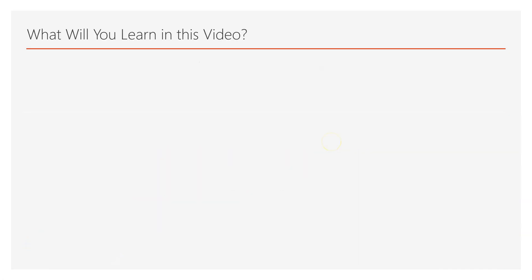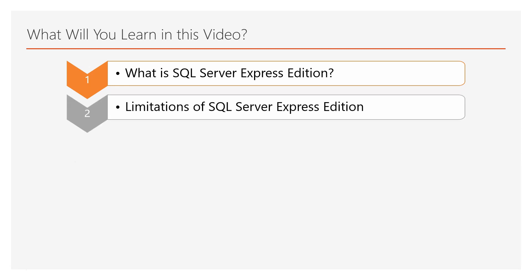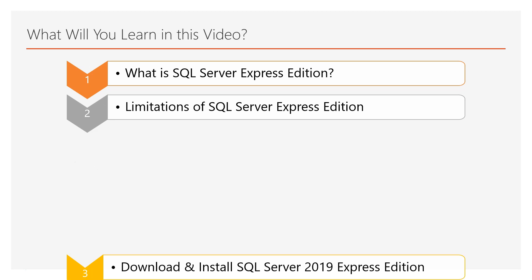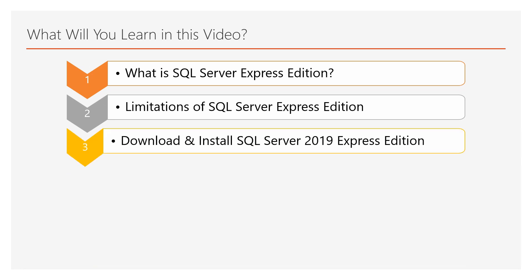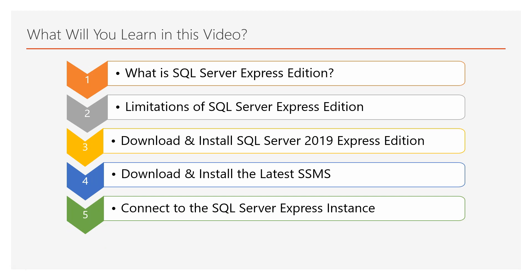So, what will you learn in this video? First, we're going to talk about SQL Server Express Edition — what it is and its limitations. Then, we're going to download and install SQL Server 2019 Express Edition on a demo Windows VM. In addition, we're going to download and install the latest SSMS, that is SQL Server Management Studio, and connect to the SQL Server Express instance using SQL Server Management Studio.